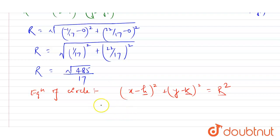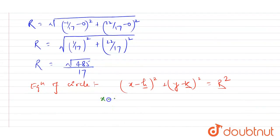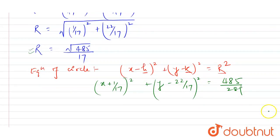Now if I substitute the values here students, you will get (x - (-1/17))² which becomes (x + 1/17)² plus (y - 22/17)² and if I put the value of r here, you will get 485/289.